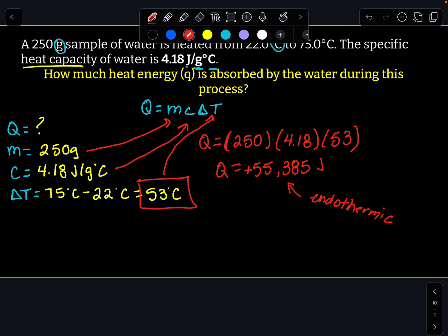And that makes sense, because my problem says I went from 22 degrees Celsius, which is a cooler temperature, to 75 degrees Celsius, which is hotter. So I put energy into that system to raise the heat up. All right, let's try one more.